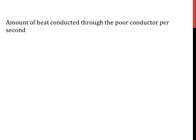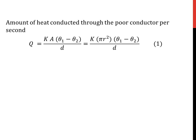We now proceed to derive the thermal conductivity of the bad conductor. The amount of heat conducted per second through the poor conductor is given by KA(θ1 − θ2)/d. On substitution of the area of cross section A with πr², we have q, the amount of heat conducted per second through the poor conductor, to be Kπr²(θ1 − θ2)/d, which we call equation 1.